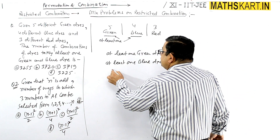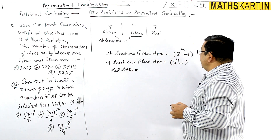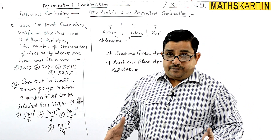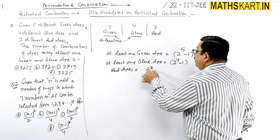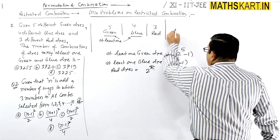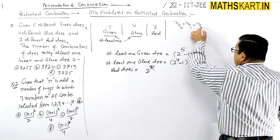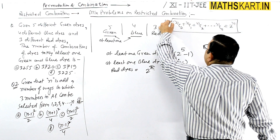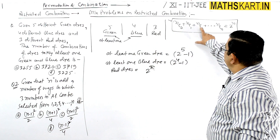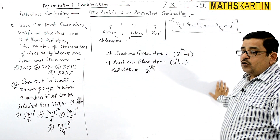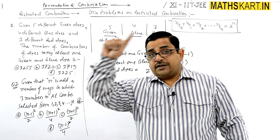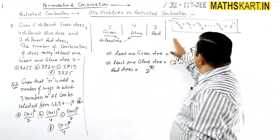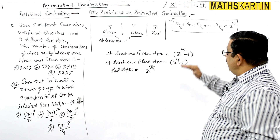For the three red dyes, there is no condition of at least one attached, so we can also select none. Therefore the red dye selection gives 2 to the power 3. This comes from the binomial theorem topic — sum of binomial coefficients — where nC0 + nC1 + ... + nCn equals 2 to the power n, meaning selecting any subset from n different items.